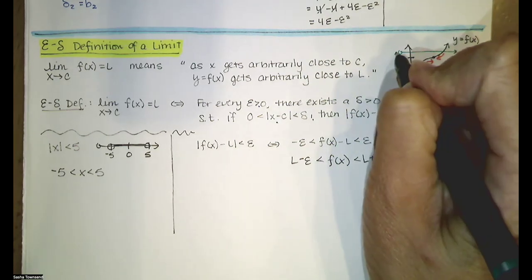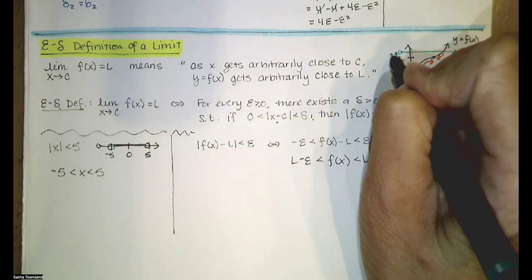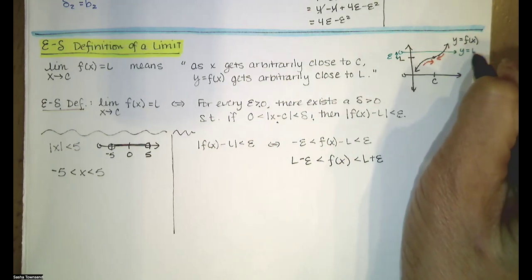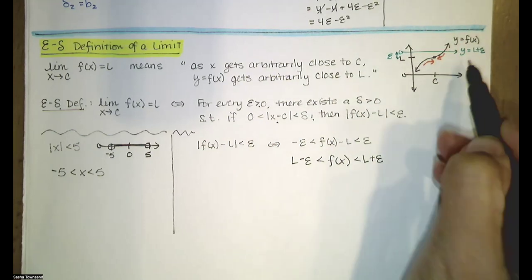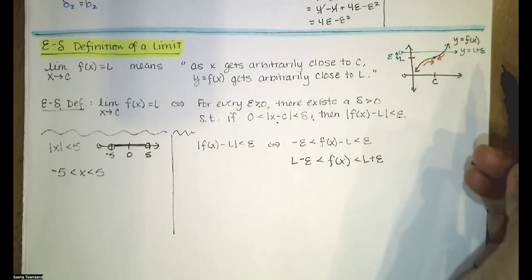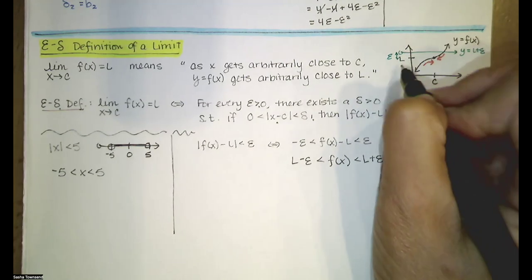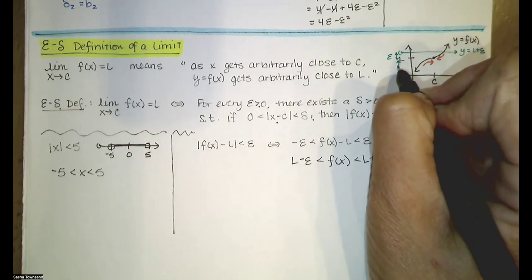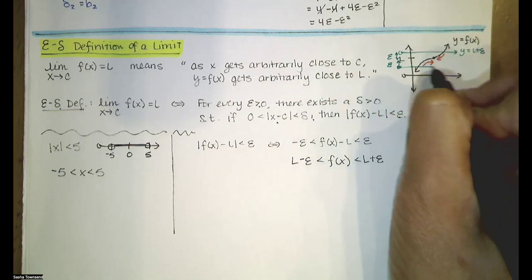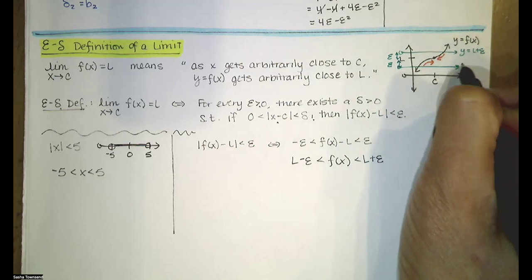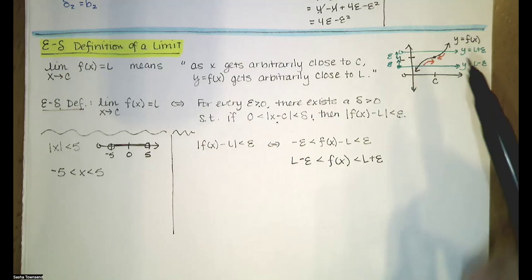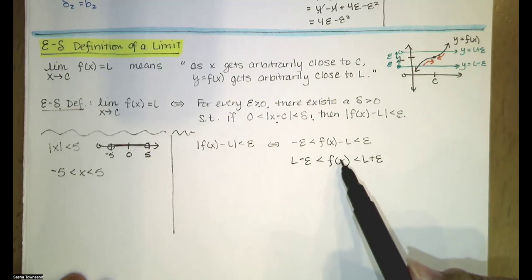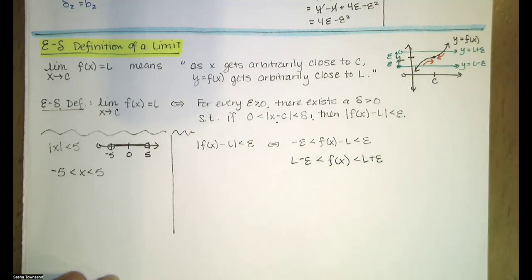If I add epsilon units to L and draw a line at y equals L plus epsilon, and subtract epsilon units from L and draw a line at y equals L minus epsilon, our y values on the graph lie in between those two horizontal lines.